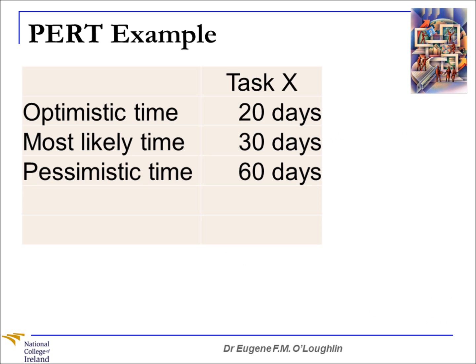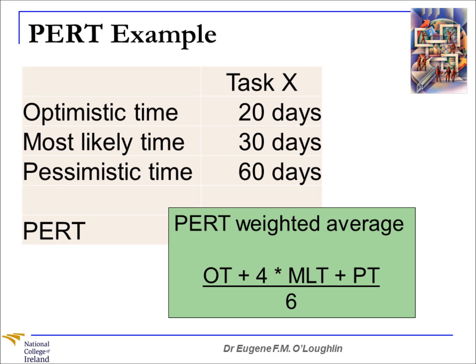So let's take a look at an example. Let's say we have a task called Task X, and we worked out that all going well, the most optimistic time is 20 days. From experience, the most likely time is 30 days, and if things start to go wrong, the most pessimistic time could be up to 60 days. Normally we would put 30 days on our Gantt chart, but we want to take into account the optimistic and pessimistic times as well.